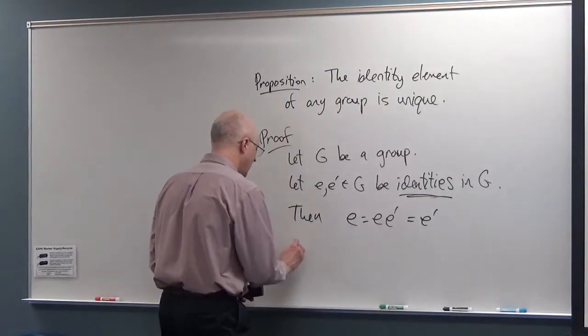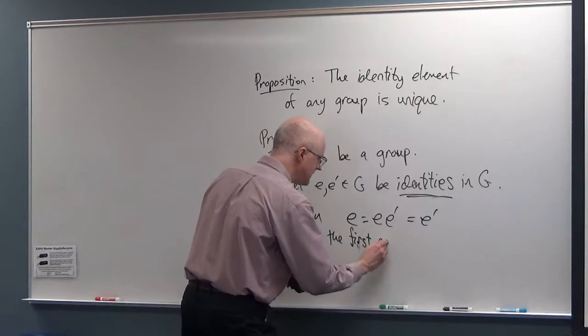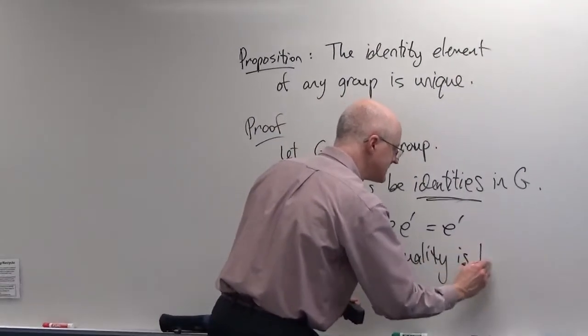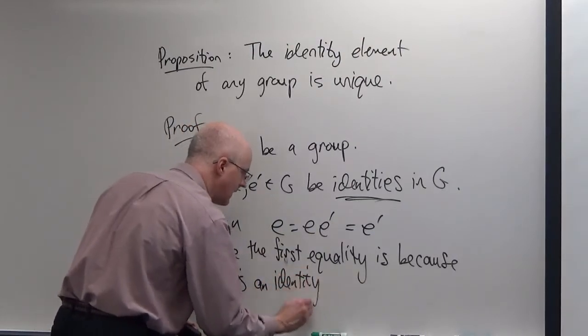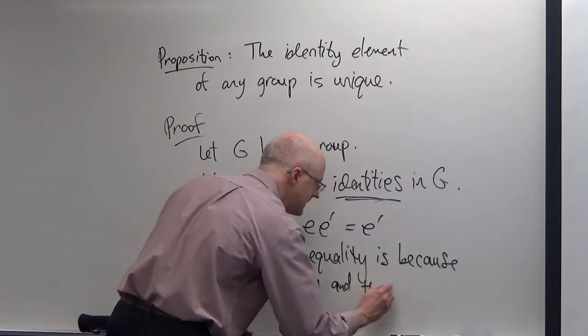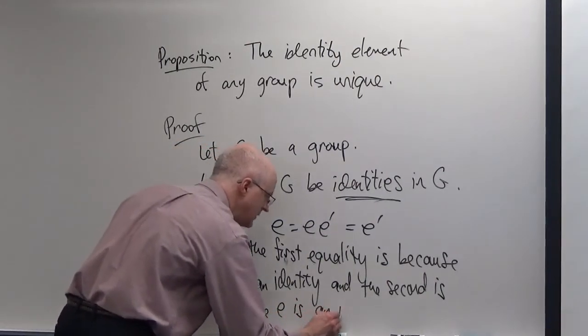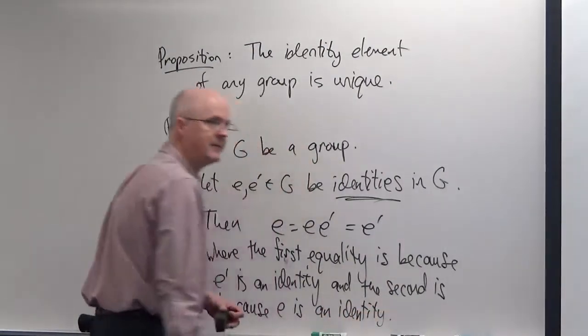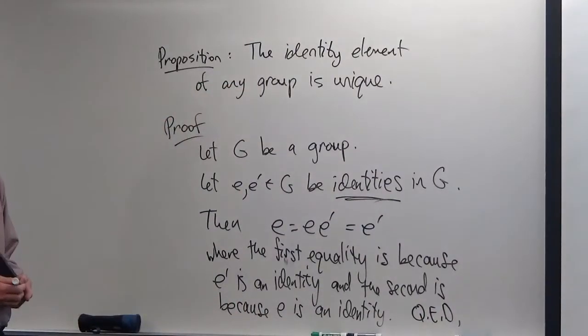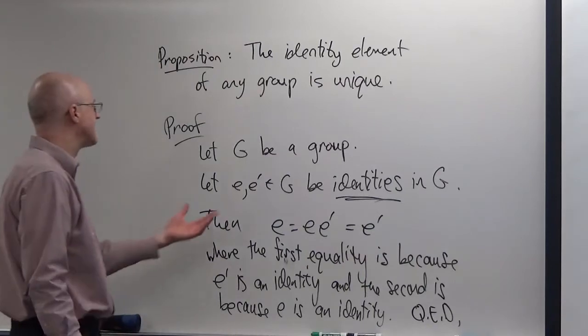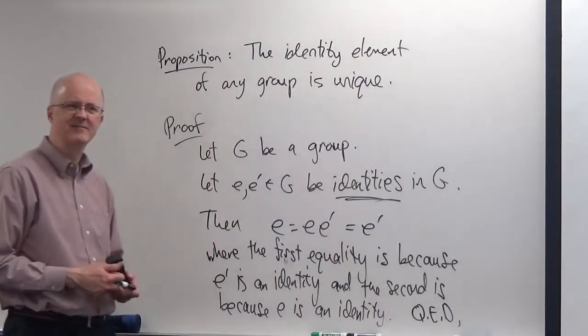I'm just going to write two equalities here and be done, essentially. Then E equals E times E prime. Why? Since E prime is an identity. E is like the A now. But now I can turn around and treat the E prime like the A and use the fact that E is the identity, an identity, and say this equals E prime. Done. Now, I should add a little bit more, where the first equality is because E prime is an identity of G, and the second is because E is an identity. And you should add those kinds of reasons for a proof like this. So, since you've shown E equals E prime for these conceivably different identities at first, then the identity must be unique. It's a little tricky, but when it comes down to it, it's pretty simple.